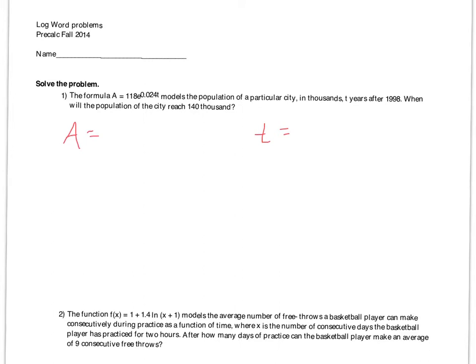T is the number of years after 1998. So we had some problems sort of like this where we had a year starting. So years after 1998. So before we do anything else, let's get all cleared up. The year 2000, what would T be? Two.